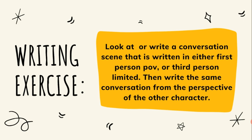Take a conversation scene that is written in either first person point of view or third person limited. Then write that same conversation from the perspective of the other character in the conversation. What changes? What does one character notice or pick up on versus the other? What does the reader learn from the switch that's different from the other point of view? Our next video will give you some more ways to help you create interesting conversations by thinking about how you can use body language in your writing.